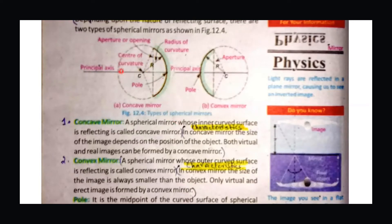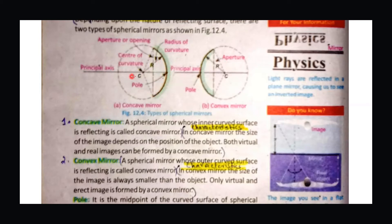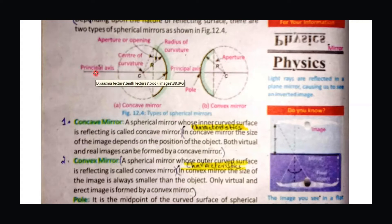The characteristics of a concave mirror: the most important thing is that its image depends on the position of the object. You can see the object in which position it is placed and how that affects the image. Secondly, you can have real images with a concave mirror.